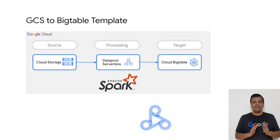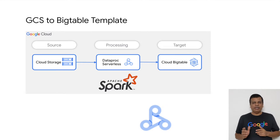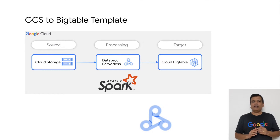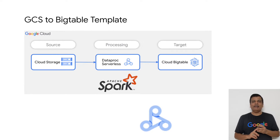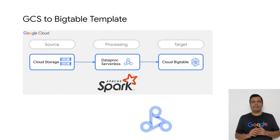This is the flow of data in the GCS to Bigtable Dataproc template. The source is GCS storage, which holds the file to be loaded into Bigtable in a storage bucket inside a specific folder. The template supports loading of CSV, Parquet, and Avro files. The file has to be uploaded in a folder and the exact location has to be passed as an argument.